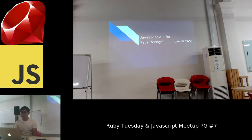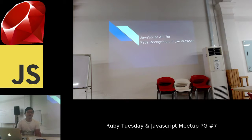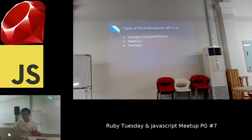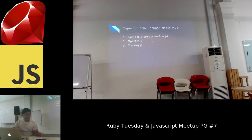Hi everyone. I want to introduce you to the face recognition API using JavaScript. Previously, facial recognition was not easy to implement on the browser — it was usually done in the backend. Now there are facial recognition APIs in JavaScript. The one I know is faceapi.js using TensorFlow.js. OpenCV also implements OpenCV.js, and there's also Tracking.js. I also just learned that WebRTC has libraries for facial recognition.